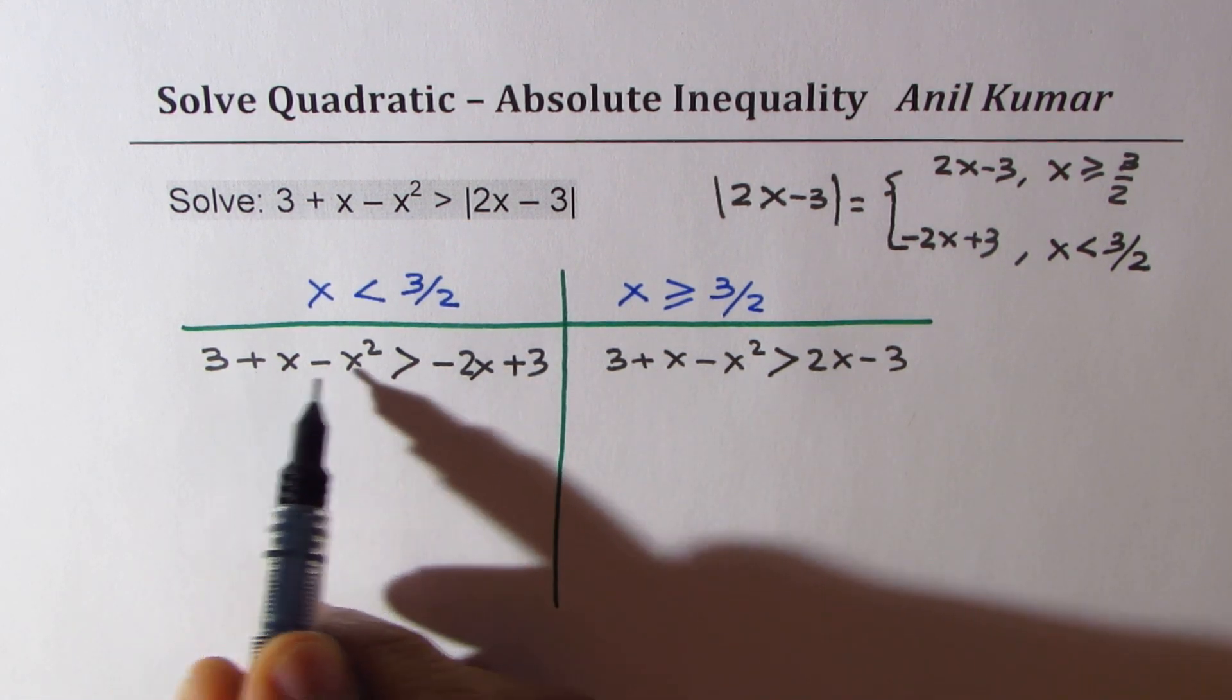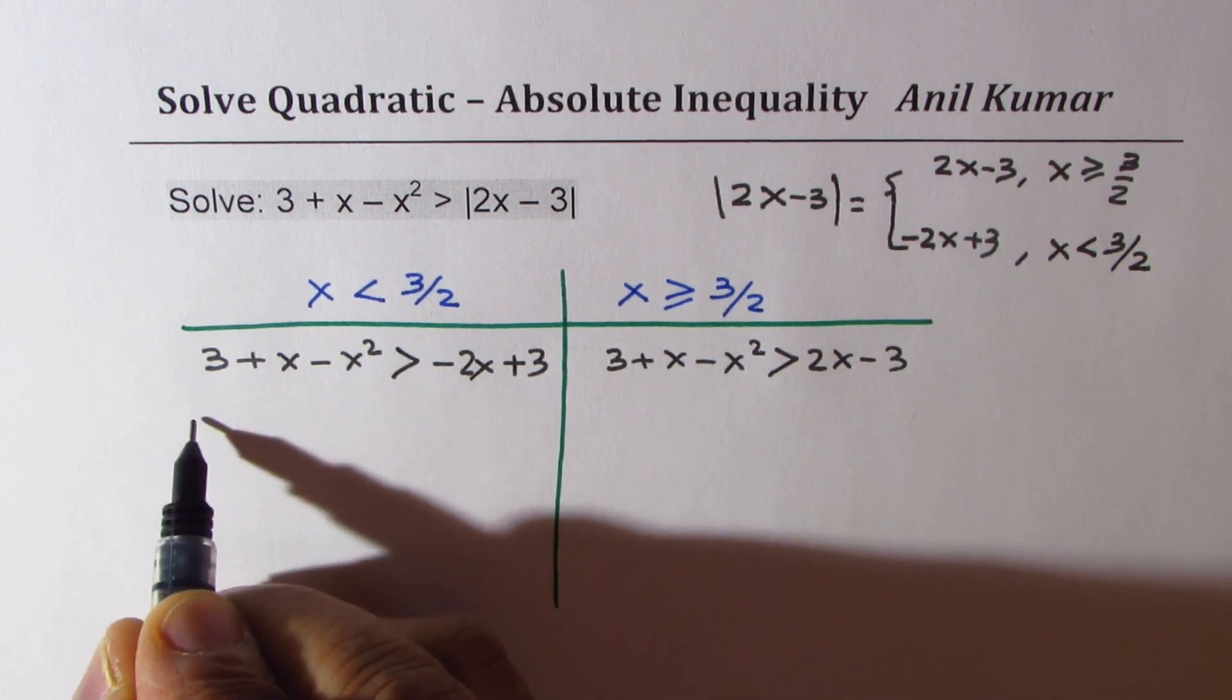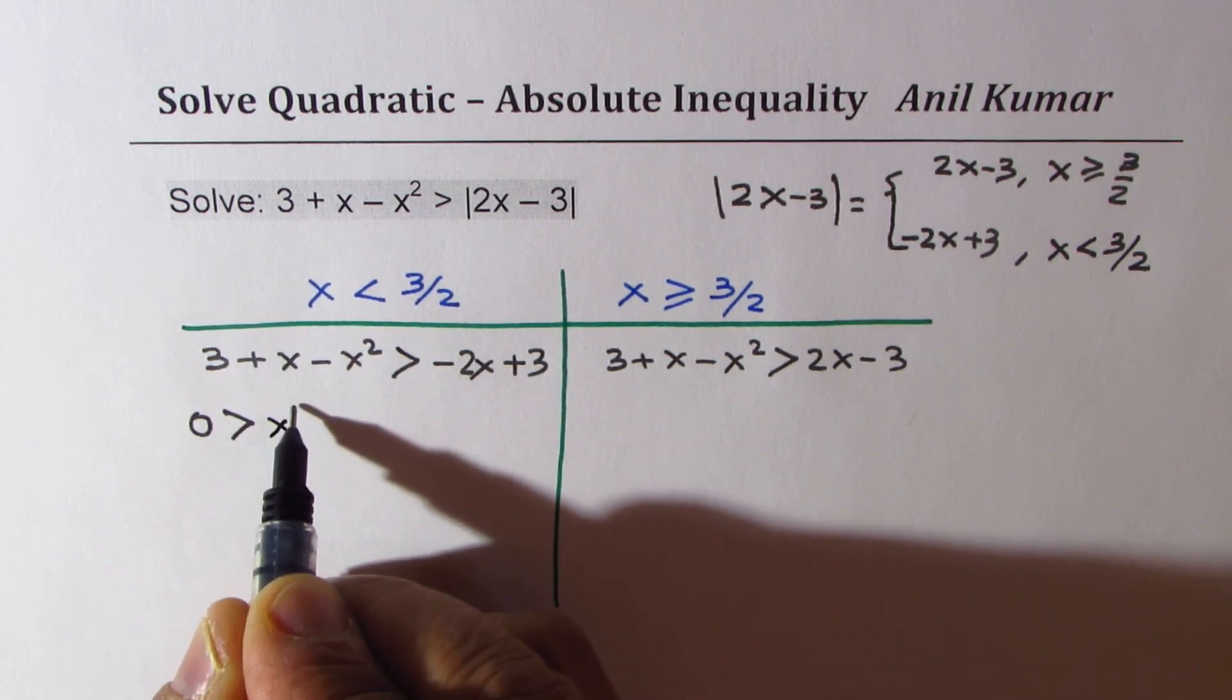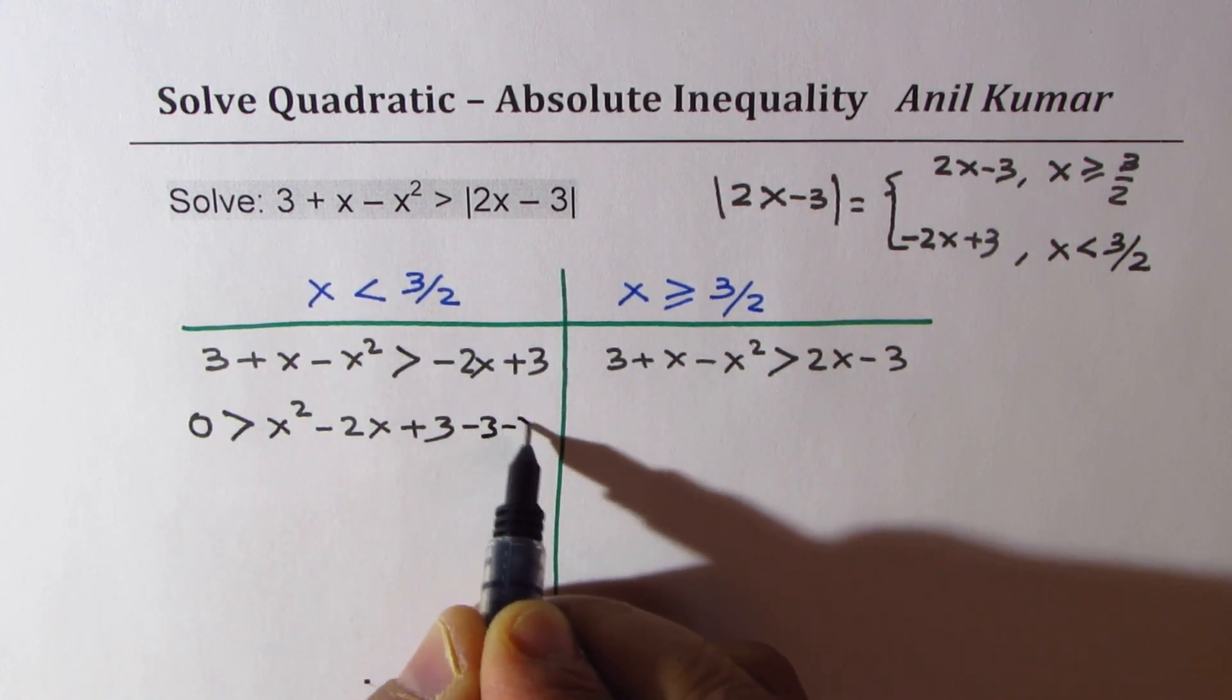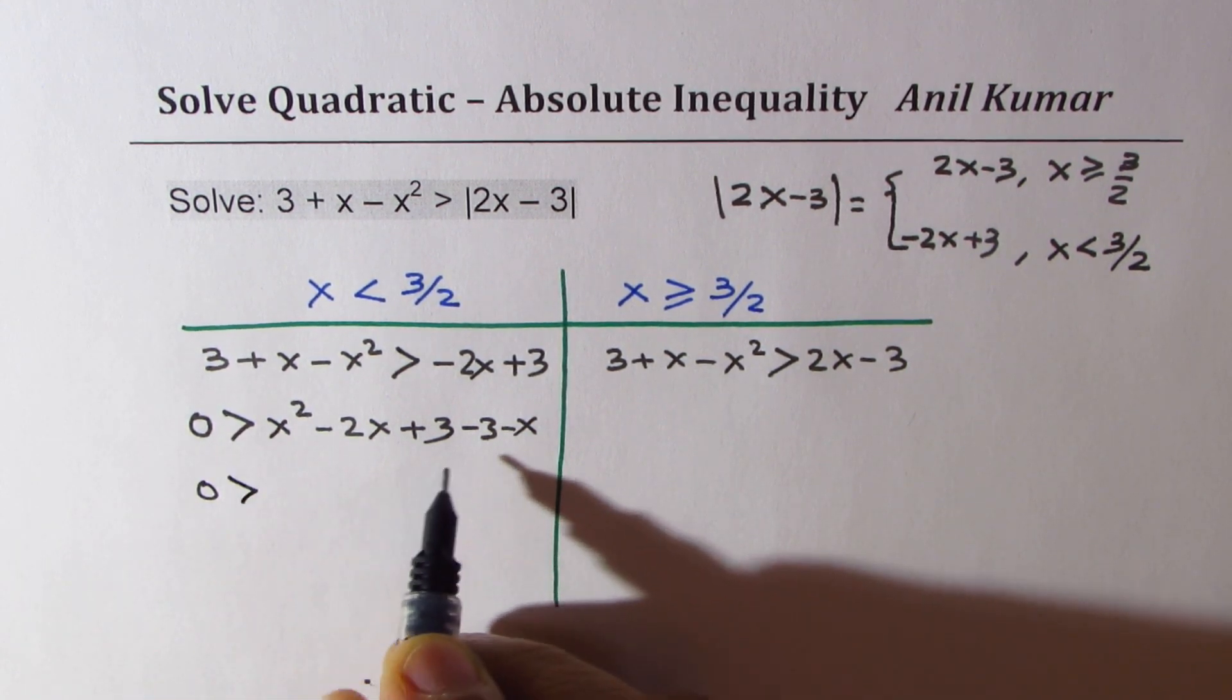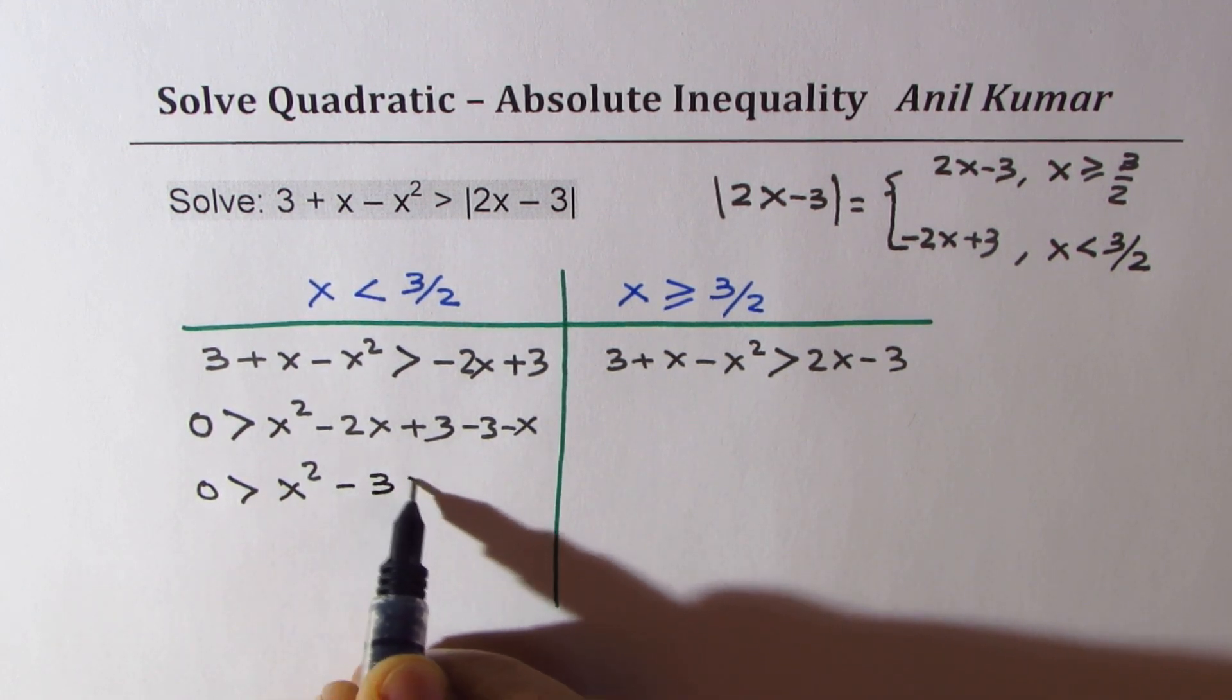Okay, let's keep all these terms to the right side. Reason being, I want to keep the leading coefficient positive. So we get 0 is greater than x squared, and we have minus 2x plus 3, minus 3 and minus x.